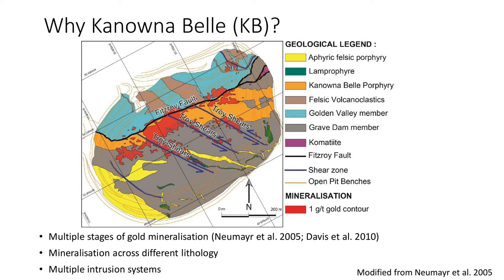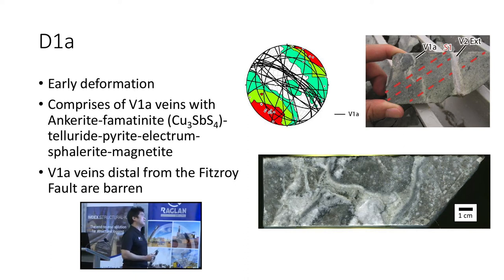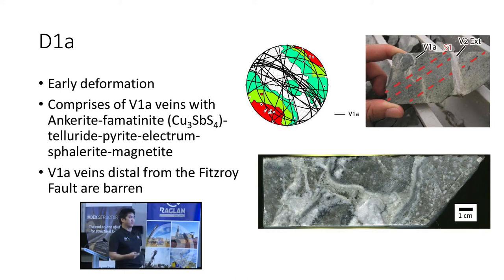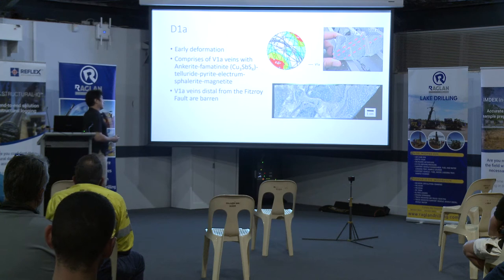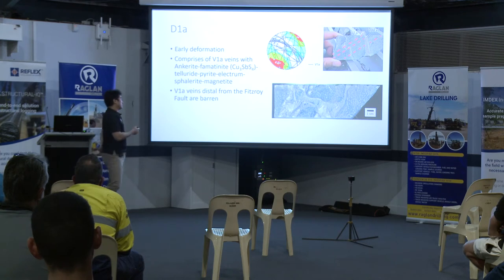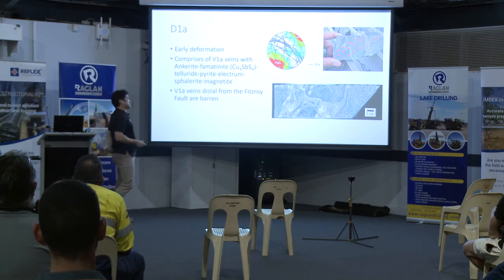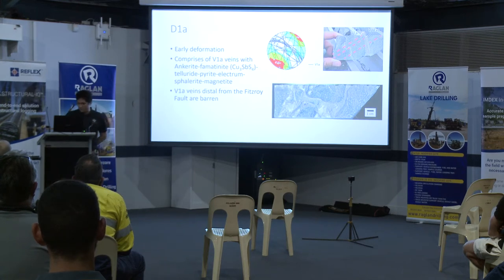Before applying more high-tech studies, I first needed to understand the deposit paragenesis — the timing of mineralization and deformation. The earliest veins in the Kanoona Bell deposit are the D1a deformation V1a veins, comprising carbonate-ankerite with famatinite (a copper-antimony sulfosalt), tellurides, electrum (very silver-rich), pyrite, and smaller magnetite. This mineralization is hosted exclusively within the Kanoona Bell porphyry, mainly controlled by the Fitzroy Fold, and carbonate veins found distal from the fold are barren.